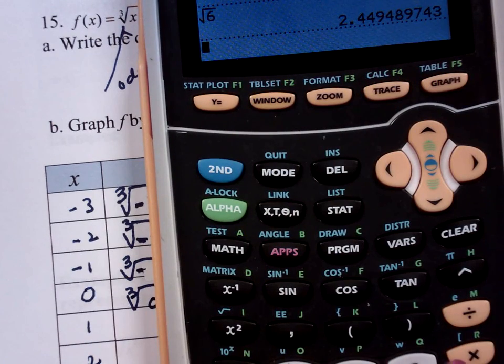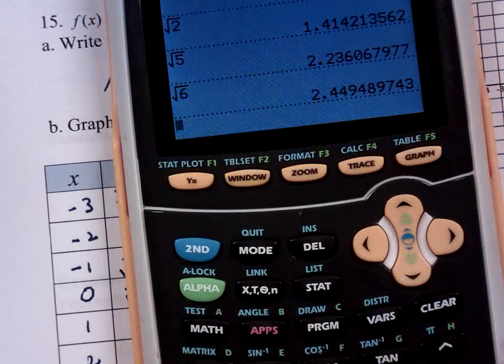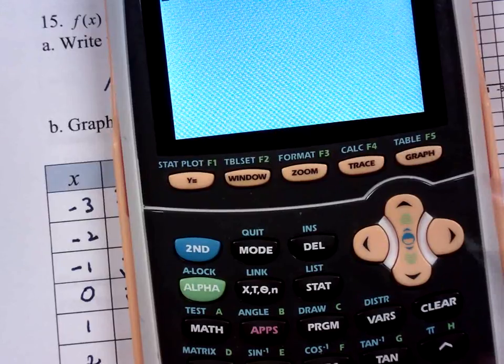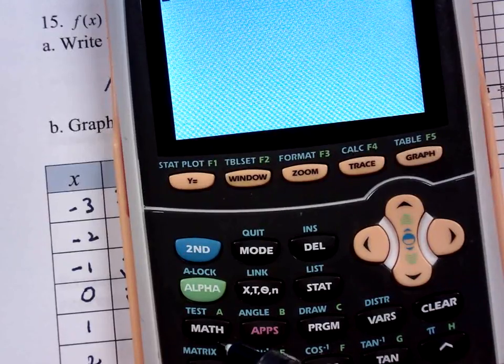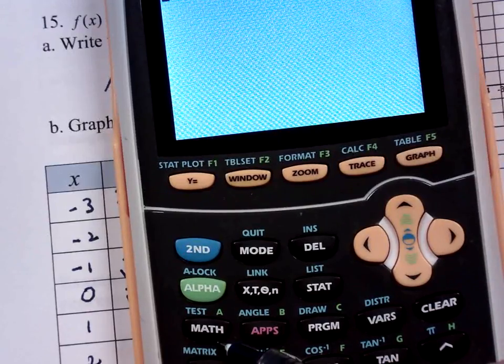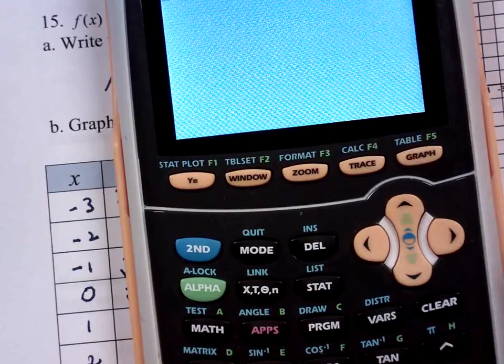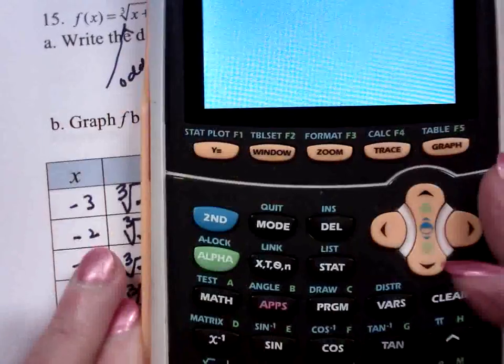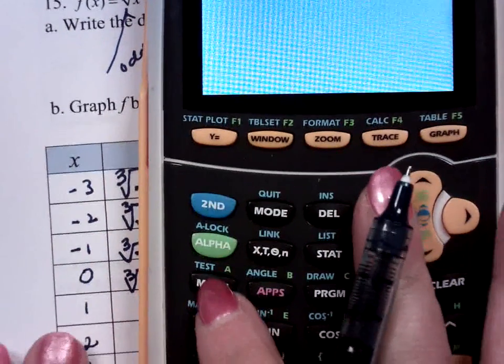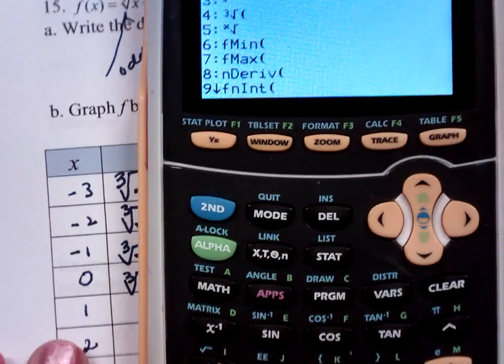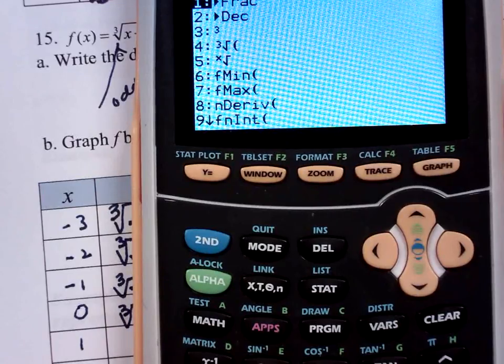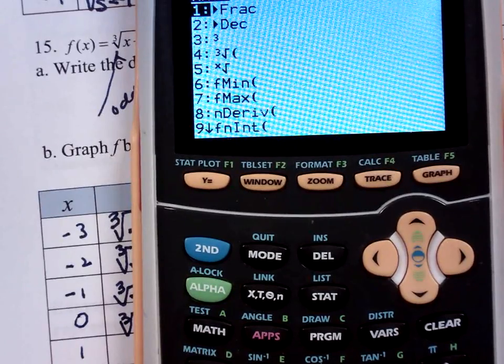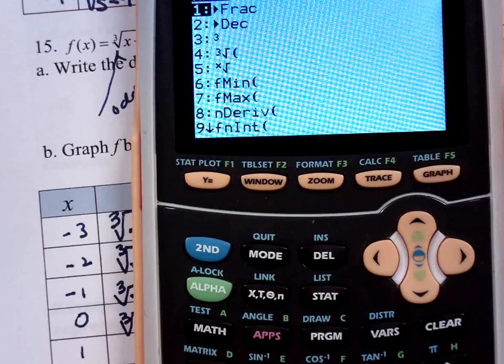So if you have a grapher, we'll start there. There is this little key called math. And if you press math, notice what number 4 is. What do you think number 4 is? Cube root.